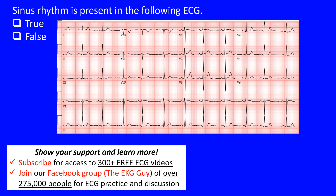You'd be surprised how often sinus rhythm goes missed, even by people who think they know how to identify it. It's not just about P waves being present — there are other criteria. The goal is understanding why you see what you see on the ECG, so it's less memorization and more comprehension.